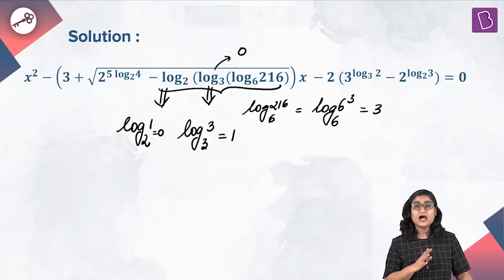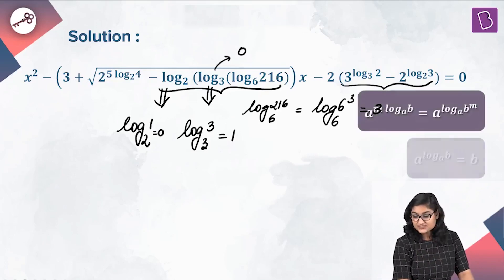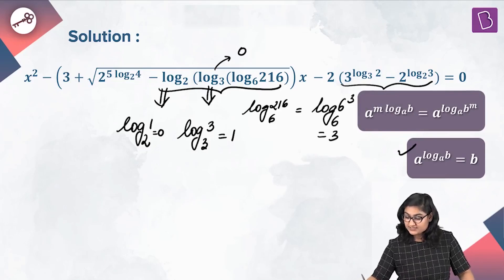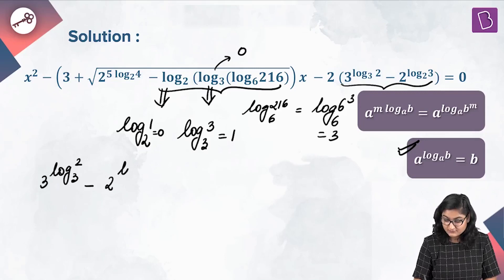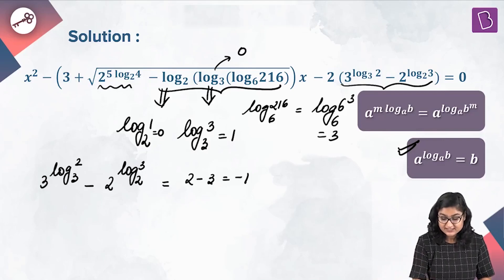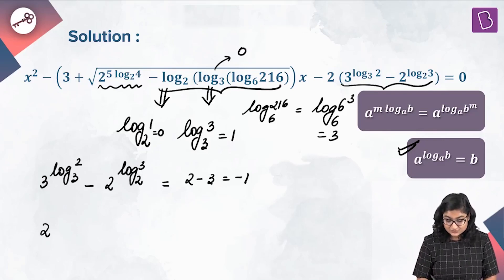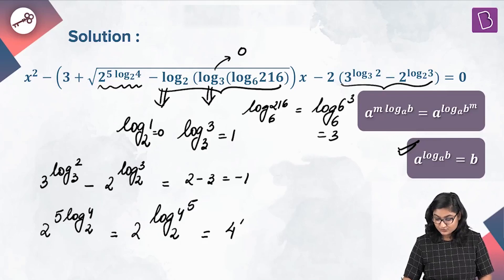We can write log of 216 to the base 6 as log of 6 cubed to the base 6, which equals 3. This 3 becomes the input for log with base 3, giving log of 3 to the base 3, which equals 1. This 1 becomes input for log with base 2, giving log of 1 to the base 2, which equals 0. So the triple log simplifies to 0. For the constant term, using log properties, 3 to the power log of 2 to the base 3 minus 2 to the power log of 3 to the base 2 equals 2 minus 3, which equals minus 1.